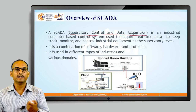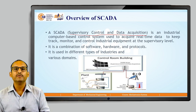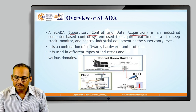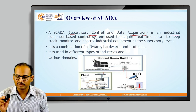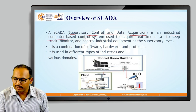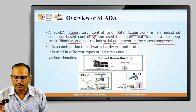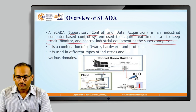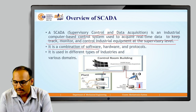It is collecting data, analyzing it, and trying to control some devices. So in automation we are using SCADA systems. It is an industrial computer-based control system used to acquire real-time data to keep track, monitor, and control industrial equipment at the supervisory level.